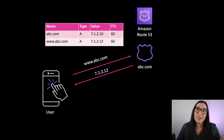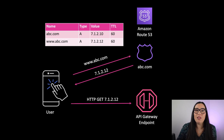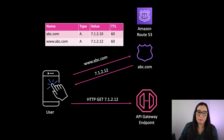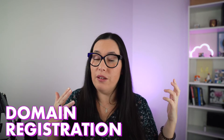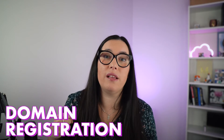The hosted zone returns the IP address, and then you can do an HTTP GET on that IP address — your browser does it for you and gets the resource you want. Now that you understand DNS and Route 53, let's look at some of the most important characteristics. The first is domain registration and hosted zones — you can create a domain or bring domains from another provider and create hosted zones for them.